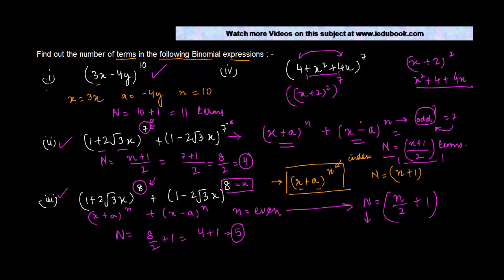So you can write this as x plus 2 whole square raised to the power 7. Now, if you recall, we saw that a to the power m to the power n is actually equal to a to the power mn. Or in other words, this will become x plus 2 to the power 2 into 7, 14.